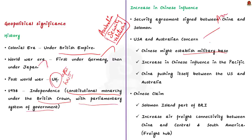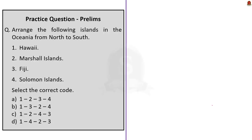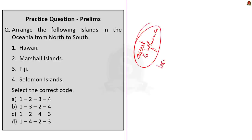China says it is engaging with Solomon Islands for purely economic reasons, as the island nation is an important component of its Belt and Road Initiative. Specifically, China sees the region as a critical air freight hub in its so-called air silk road, connecting Asia with Central and South America. Although China's real intentions remain unclear, China is clearly trying to increase its sphere of influence among the island nations of Oceania.